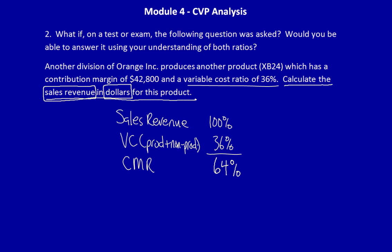Well, what information do we have? We have the Contribution Margin in dollars, $42,800. Can we work backwards in order to get sales revenue in dollars? And we can. Let's look at how we can do this.